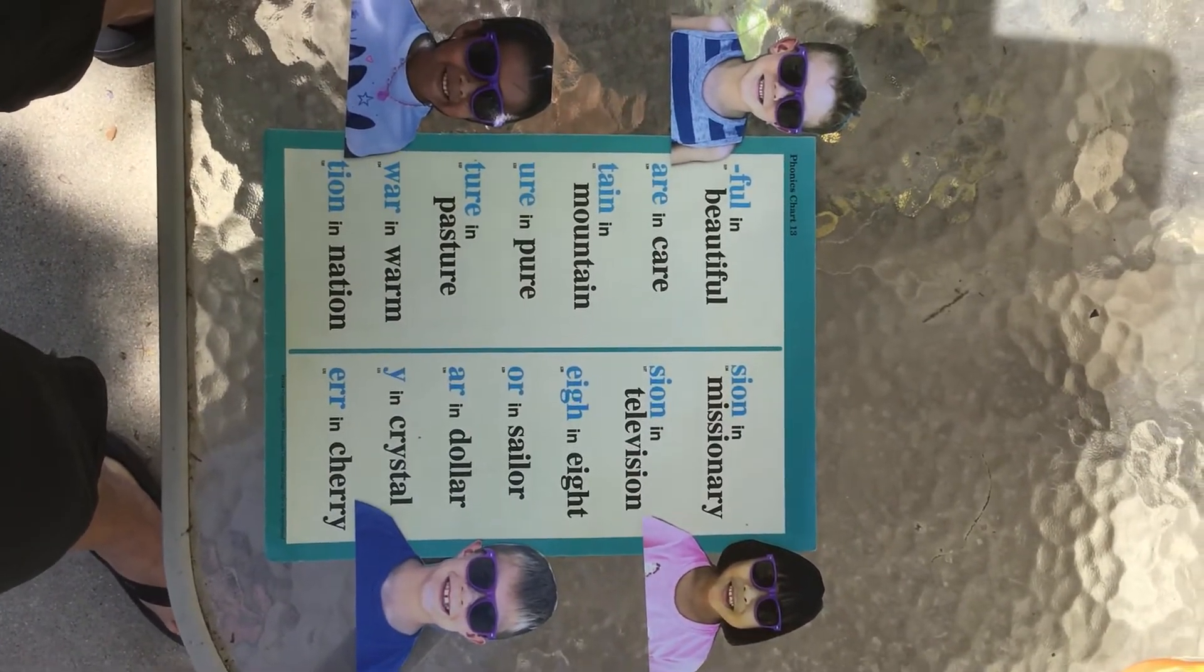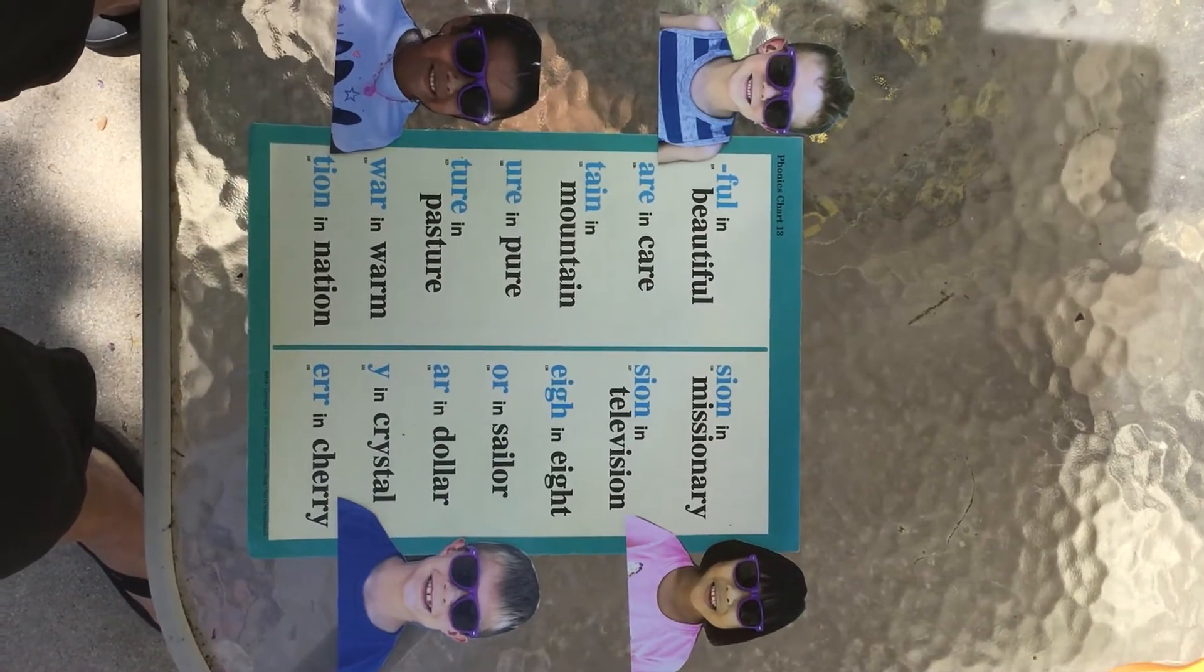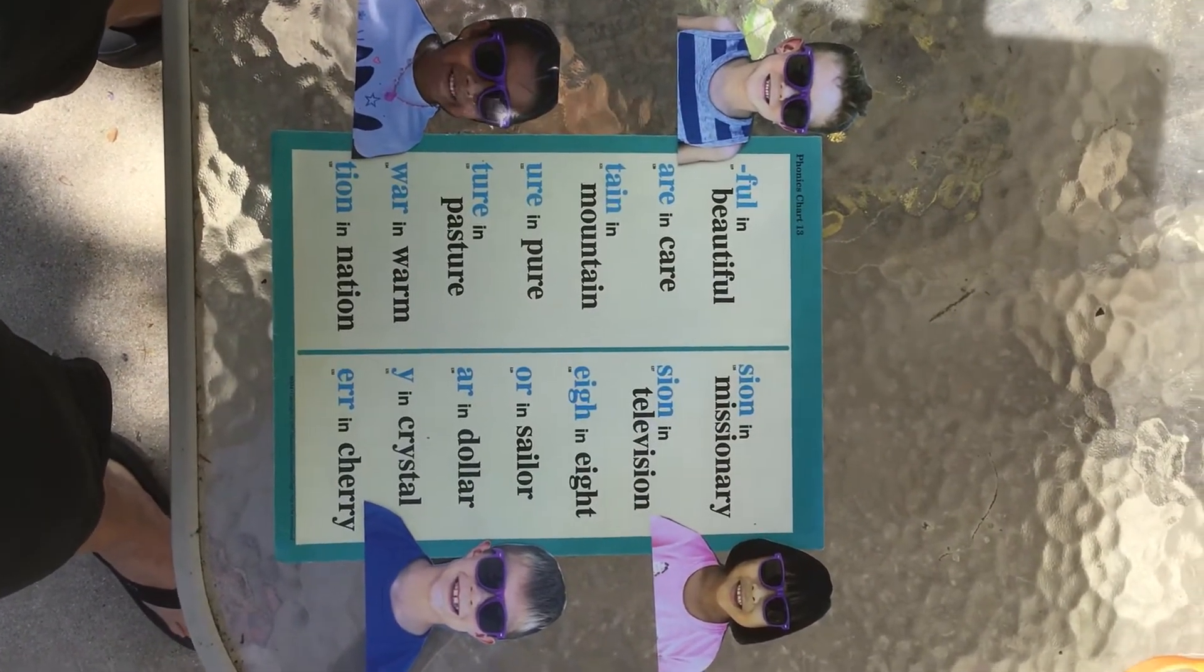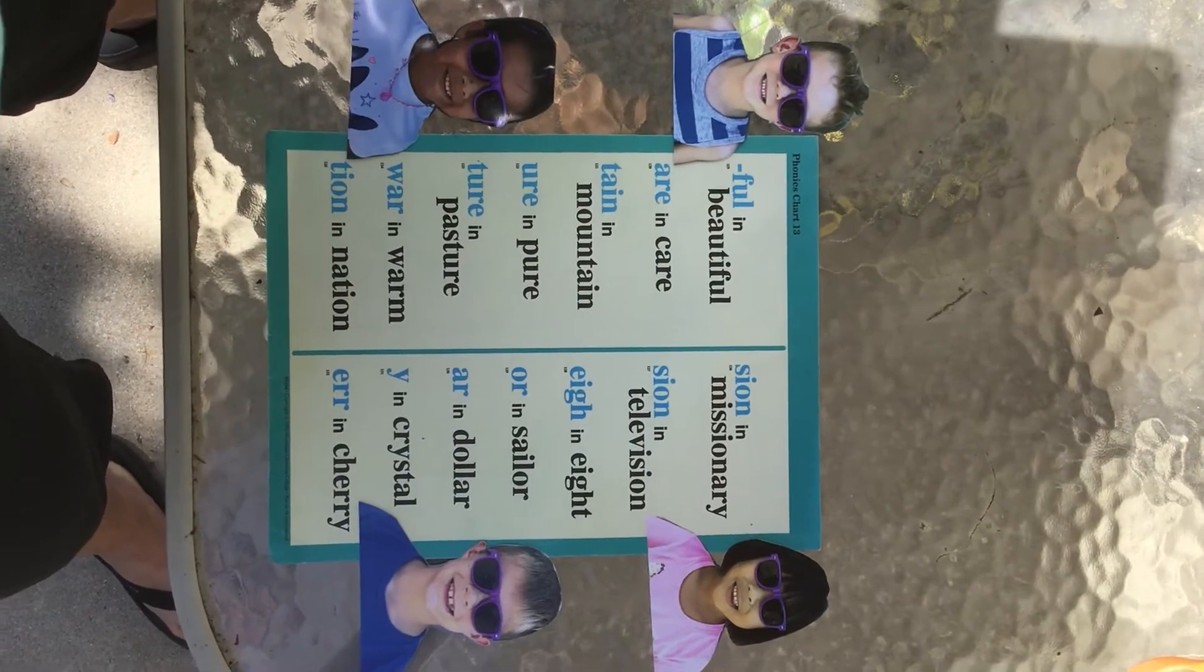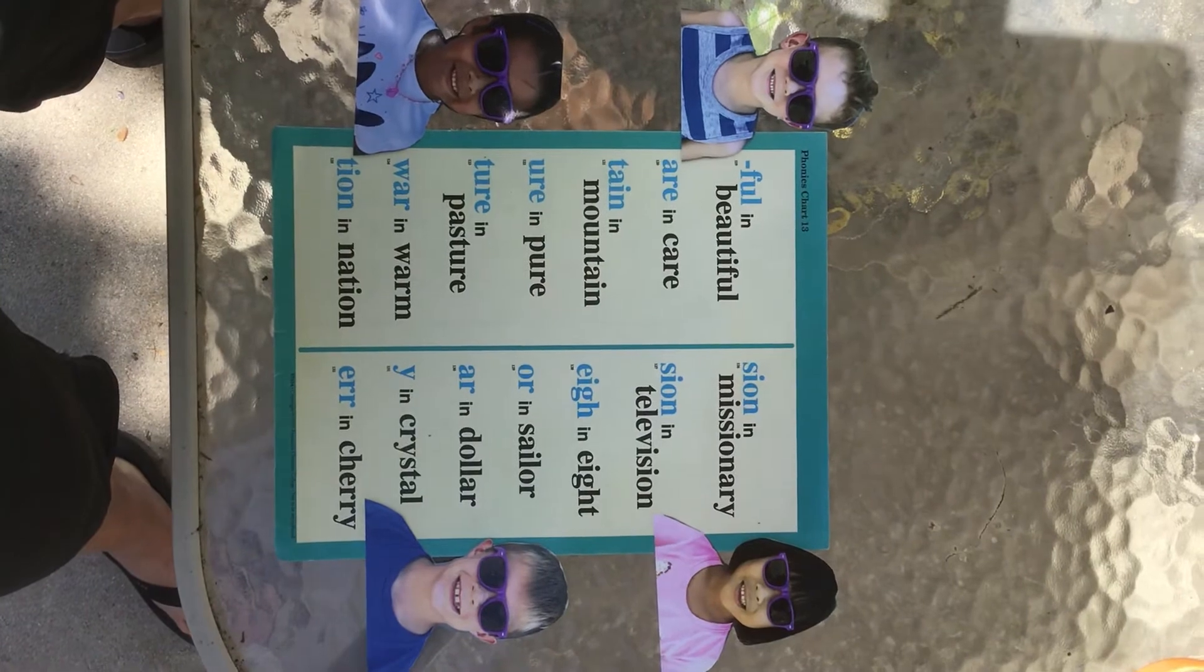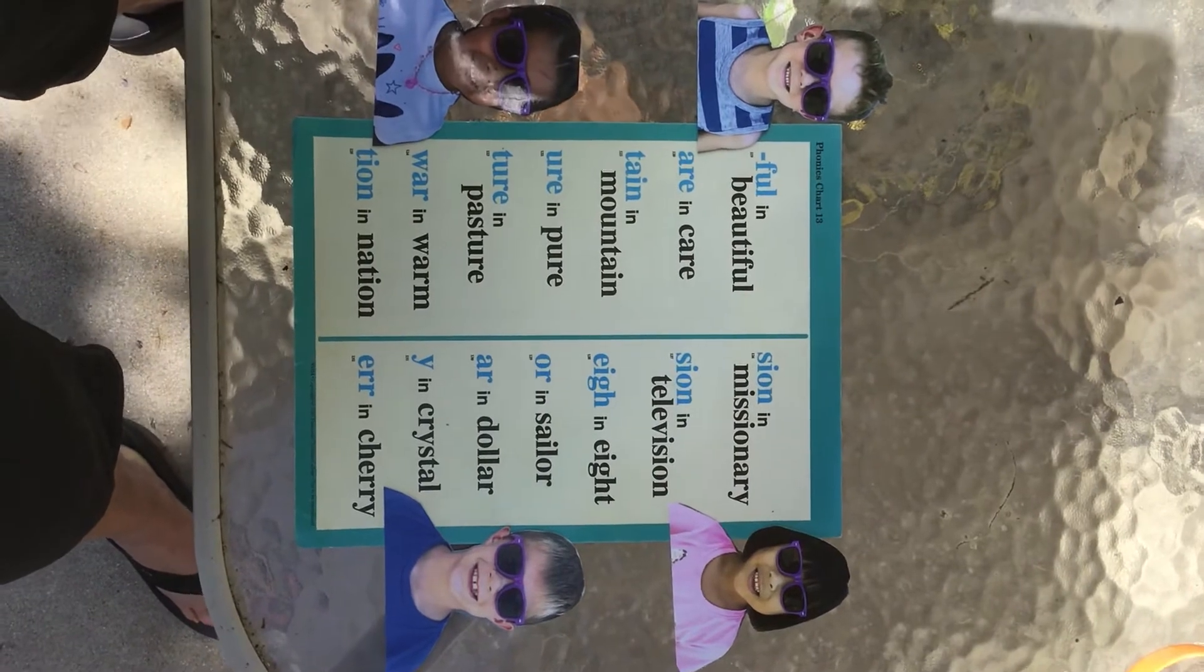U-R-E says you're in pure. T-U-R-E says churr in pasture. W-A-R says war in warm.